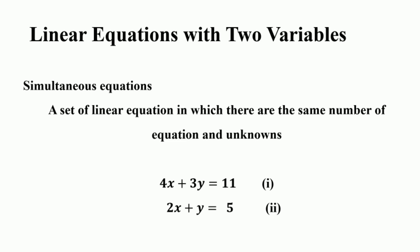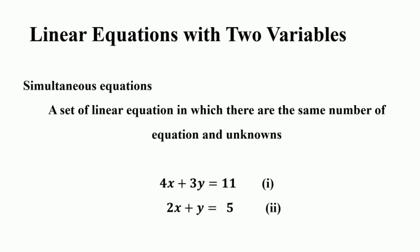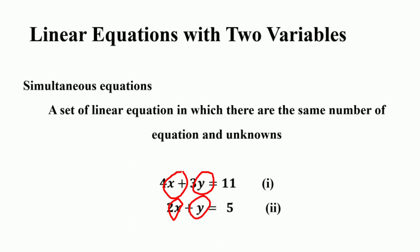A set of linear equations in which there are the same number of equations and unknowns is called a simultaneous equation. When we have two variables and two equations, we have a system of linear equations with two variables. For example: 4x plus 3y is equal to 11, and 2x plus y is equal to 5. We have two equations with two unknown variables x and y, and the power of x and y is 1, so it is a linear equation with two variables.